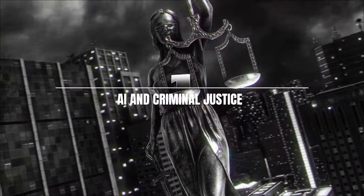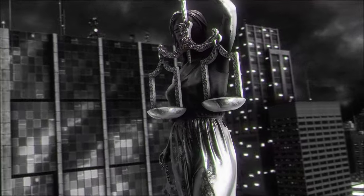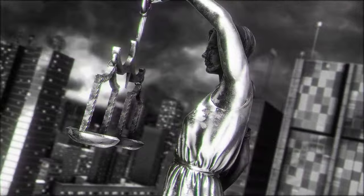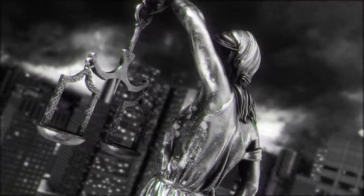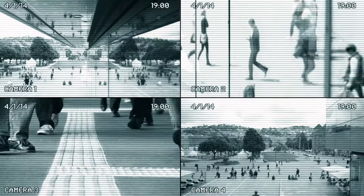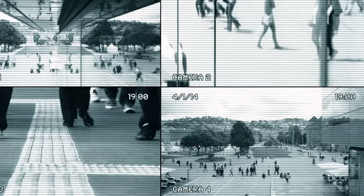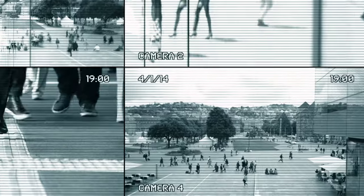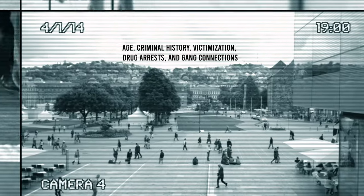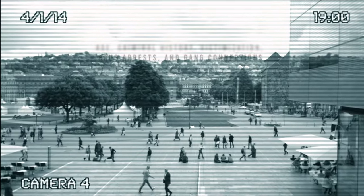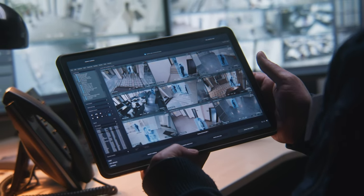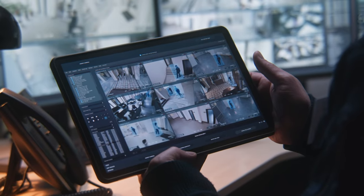Artificial Intelligence is also making its way into the criminal justice system, and Chicago is leading the charge with its AI-driven strategic subject list. This innovative system aims to predict the risk of individuals becoming future criminals by analyzing various factors such as age, criminal history, victimization, drug arrests, and gang connections. With a scale ranging from 0 to 500, over 400,000 people are carefully assessed and ranked.